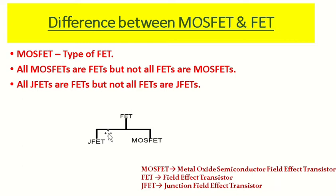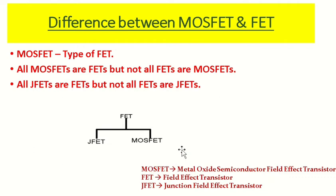As we can see in the diagram here, FET is classified into two major types: JFET and MOSFET. There is another classification also, but we will majorly classify it this way because these are the most commonly used types. So JFET is a type of FET, and MOSFET is also a type of FET.